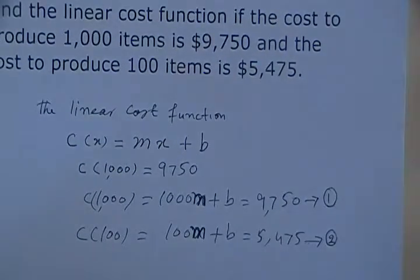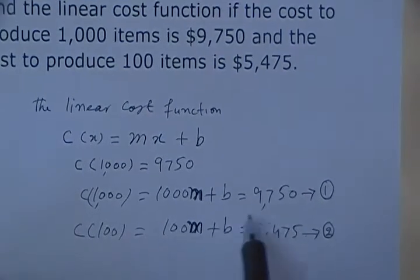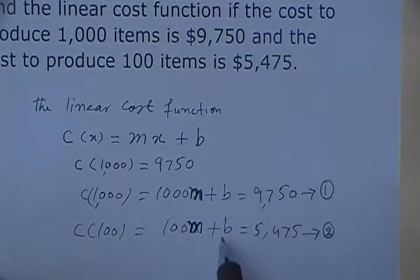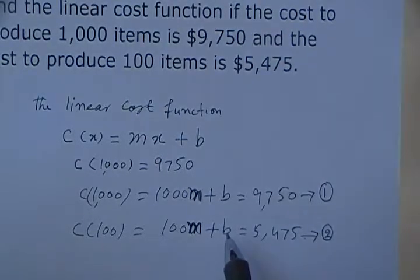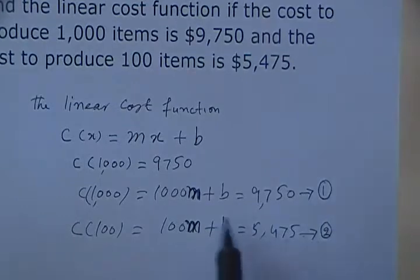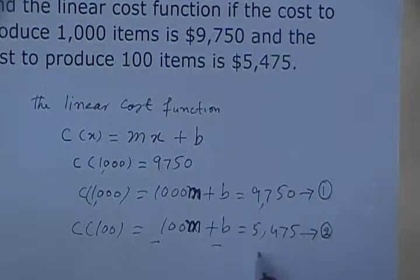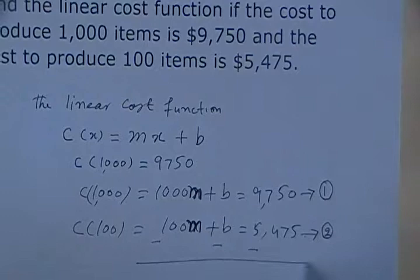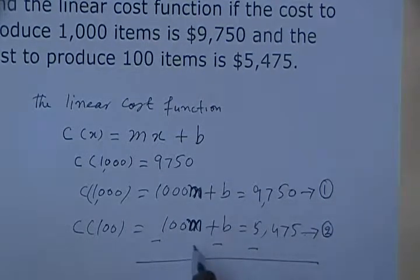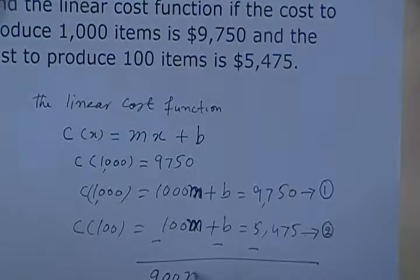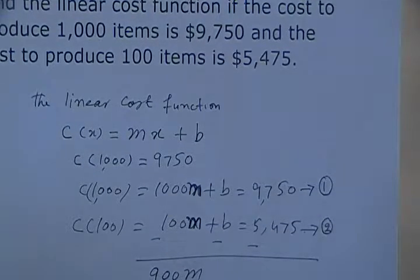Now we have to solve these two equations for m and b. We can solve them using the elimination method. Subtracting equation two from equation one on both sides, we get 1000m minus 100m is 900m, and b minus b is 0.